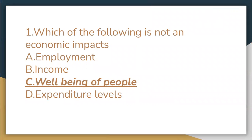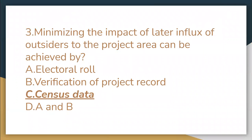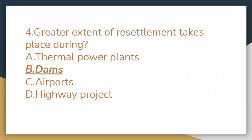First question: which of the following is not an economic impact? Well-being of people. The marginal cost is the cost incurred for an additional unit. Minimizing the impact of later influx of outsiders to the project area can be achieved by census data. Greater extent of resettlement takes place during dams.